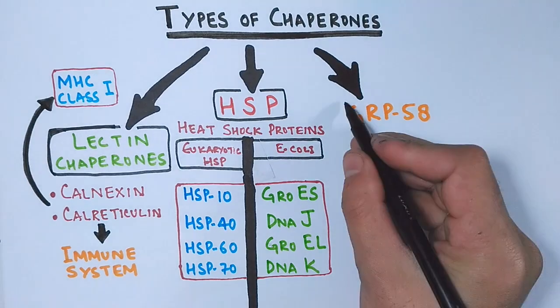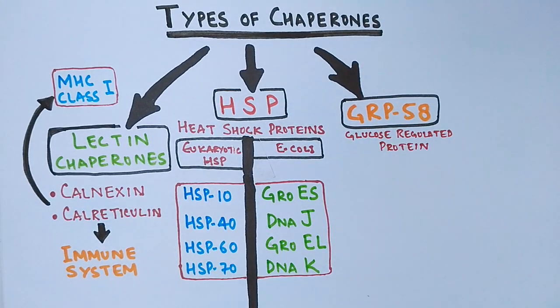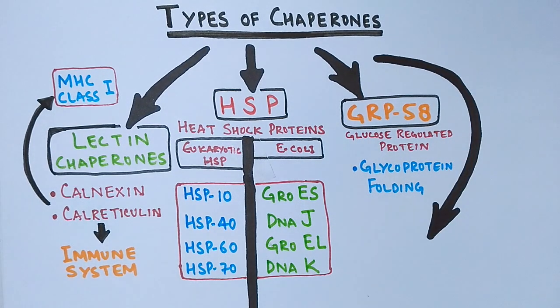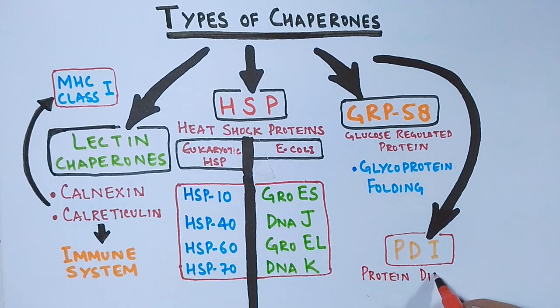Then we have GRP58 protein, that's glucose regulated protein chaperone that assists in glycoprotein folding. Another protein folding chaperone is PDI, that's protein disulfide isomerase.